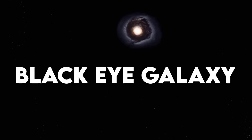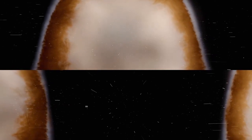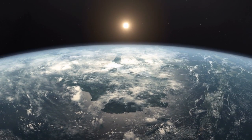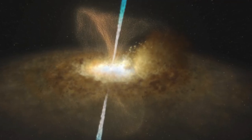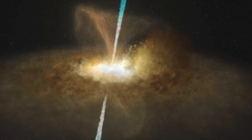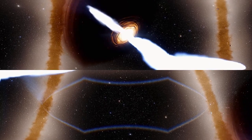Black Eye Galaxy. The Black Eye Galaxy, also known as Messier 64 or M64, is a stunning spiral galaxy located approximately 17 million light-years away from Earth in the constellation Coma Berenices. It gets its name from the prominent dark band of dust that appears to encircle its bright nucleus, resembling a black eye.